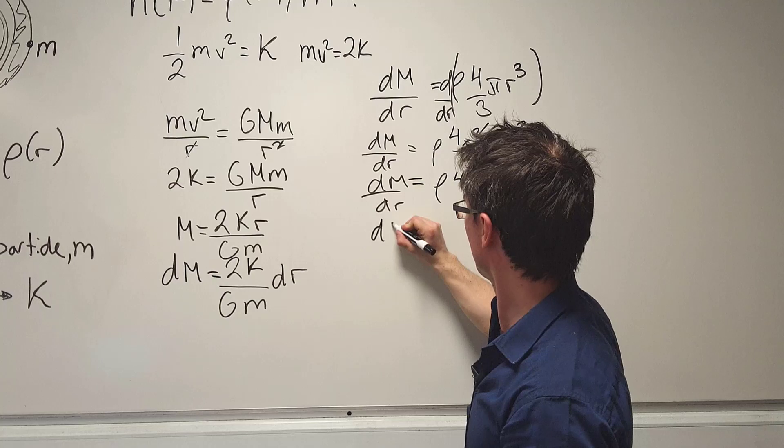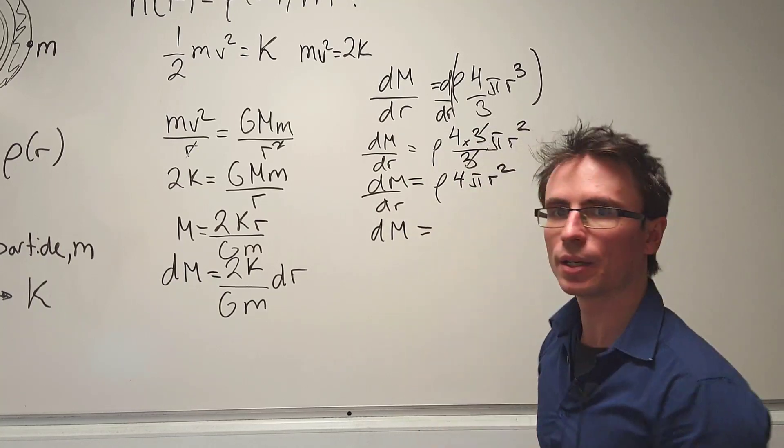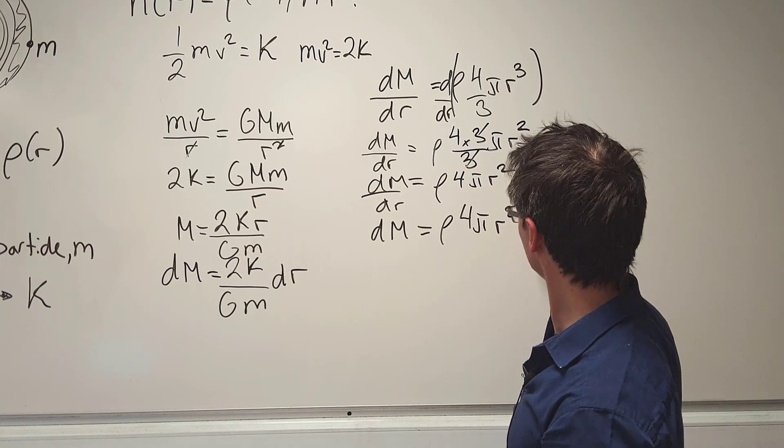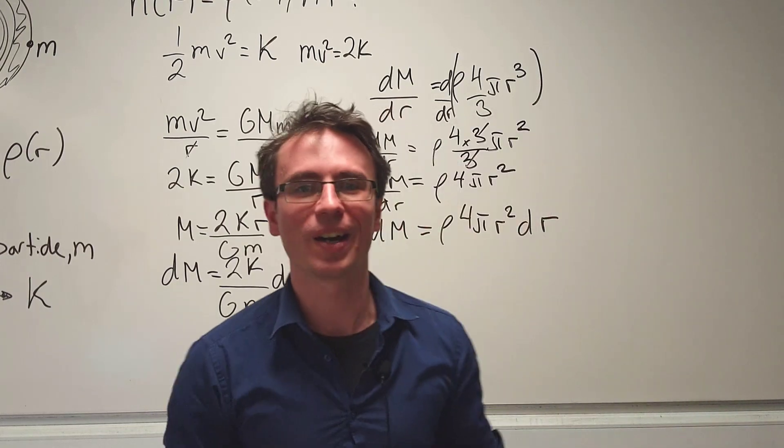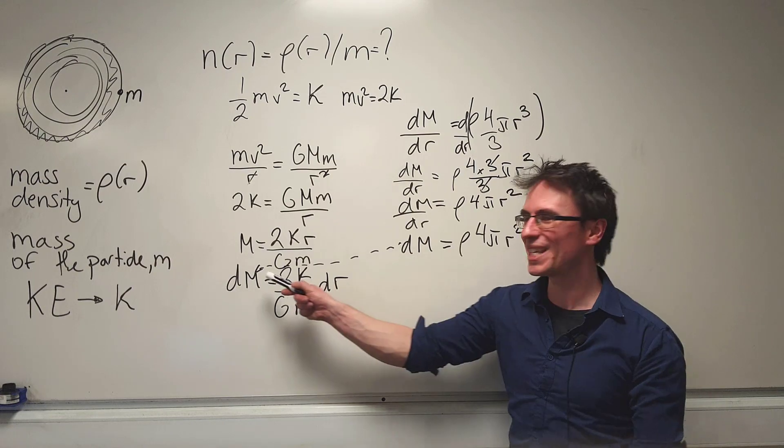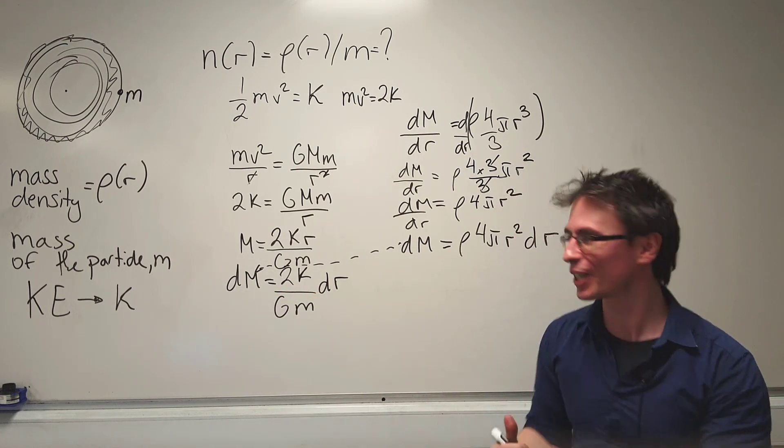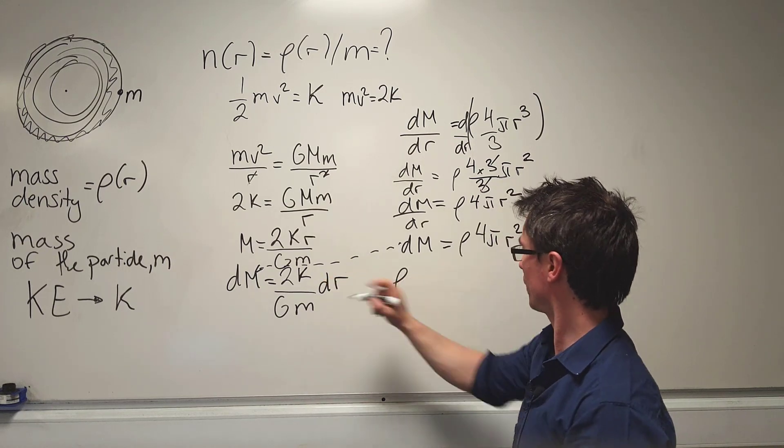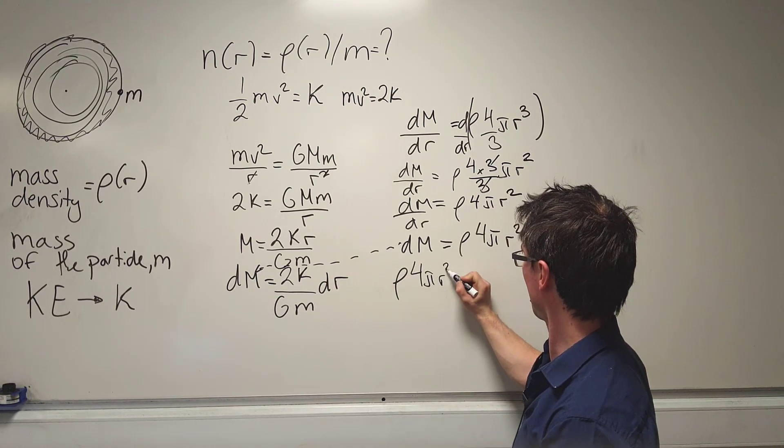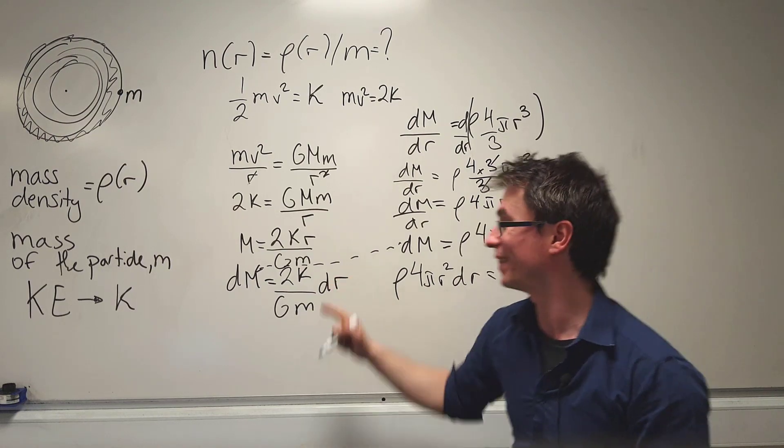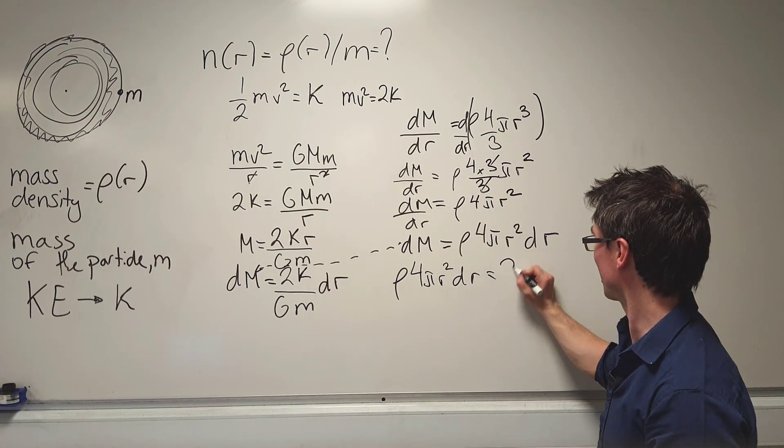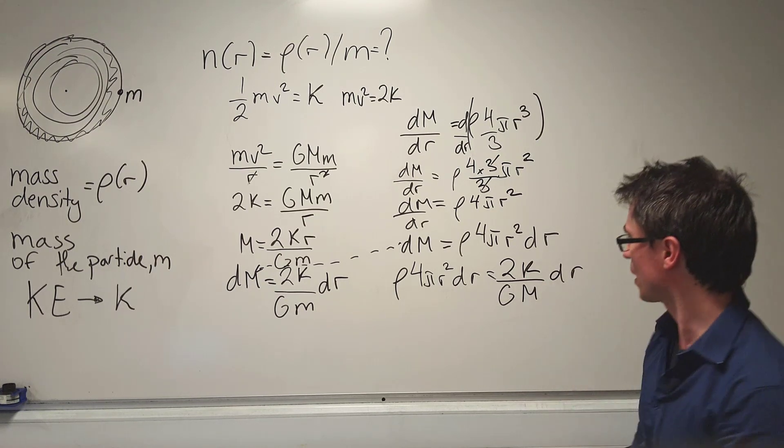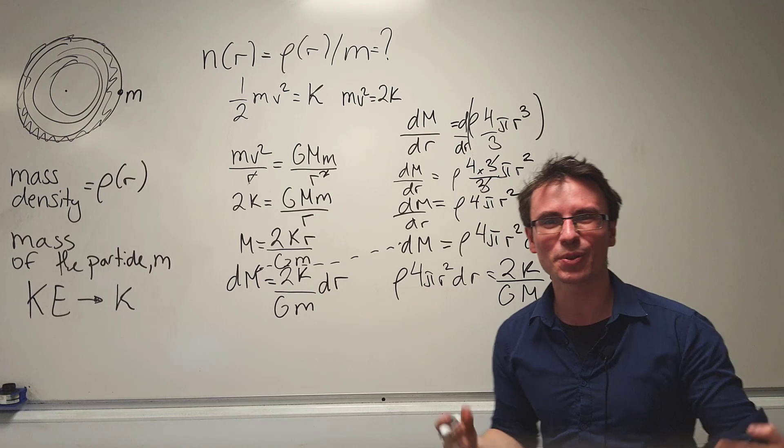The value of dm would then just be equal to rho times 4 pi r squared dr. Now let's plug this value of dm back into this equation, and what we are going to get is that rho, so rather than dm, I'm writing 4 pi r squared dr, and this will equal to this expression over here, which is 2k over g m dr.